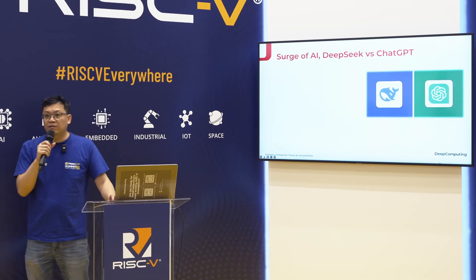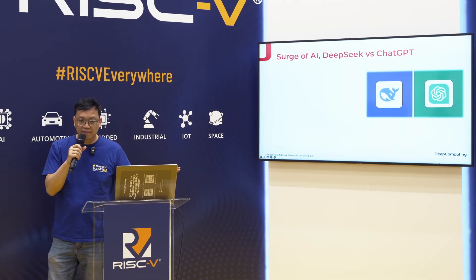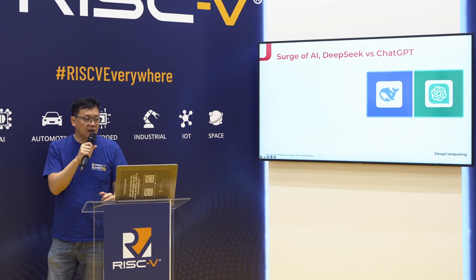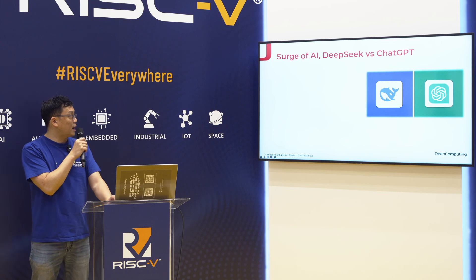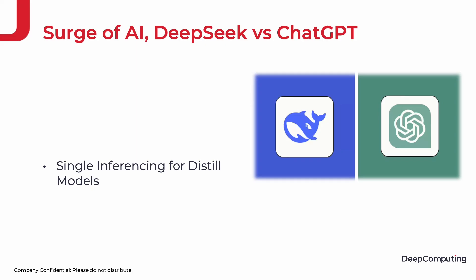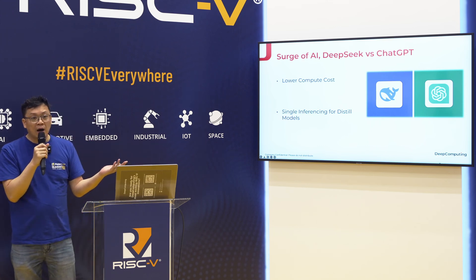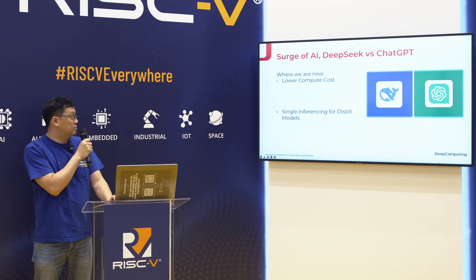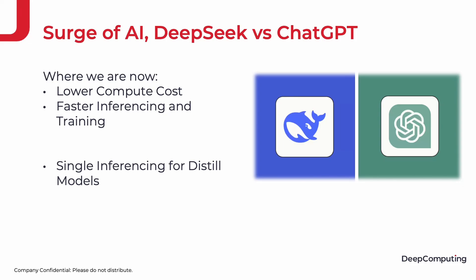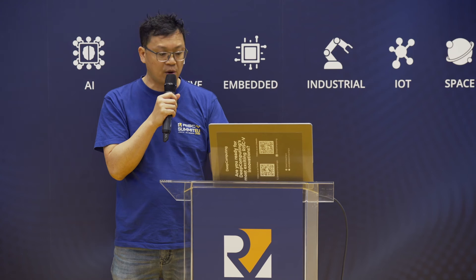This year, since the beginning, we've all been talking about DeepSeek — it's shaking the world. DeepSeek is very efficient; it enables you to run a very small, very accurate model on a local device. For the distilled models, we have very low compute cost. So once we have the local device, we now have faster inferencing and we can walk towards post-training as well.